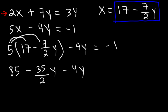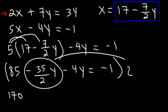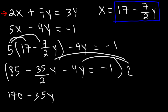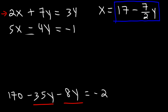To get rid of the fraction, multiply every term on both sides by 2, the denominator. 2 times 85 is 170. The 2s cancel with the fraction, leaving negative 35y. 2 times negative 4y is negative 8y, and 2 times negative 1 is negative 2. Now combine like terms: negative 35y minus 8y is negative 43y.